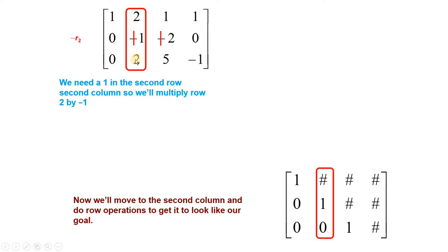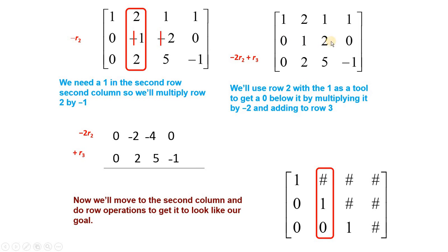Next کام: اسی two کو zero کرنا ہے۔ So r3 minus two times r2 — multiplying this line by minus two and then add with the elements of the third row. اسی line کو minus two سے ضرب دینا ہے اور اس کے ساتھ add کرنا ہے۔ تو یہاں پہ یہ two zero بنیں گے — this two will become zero. تو یہاں پہ ہمیں zero ملے گا۔